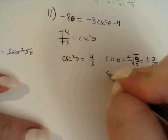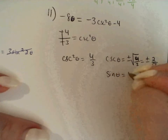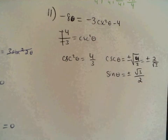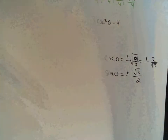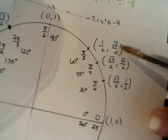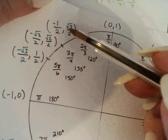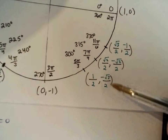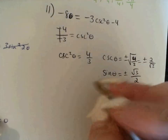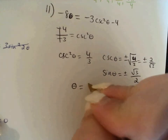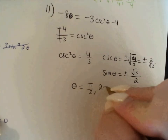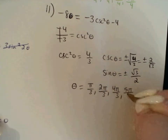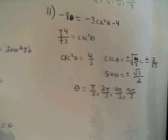Cosecant equals 2 over the square root of 3 means its reciprocal, sine, equals the square root of 3 over 2. So we're looking for when sine equals positive and negative square root of 3 over 2. Sine is the y value. That's at π/3 and 2π/3 for the positive values, and 4π/3 and 5π/3 for the negative values. So theta equals π/3, 2π/3, 4π/3, and 5π/3.